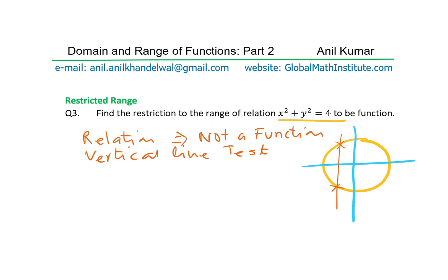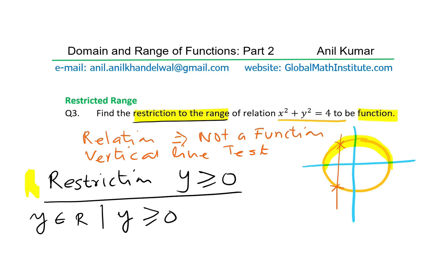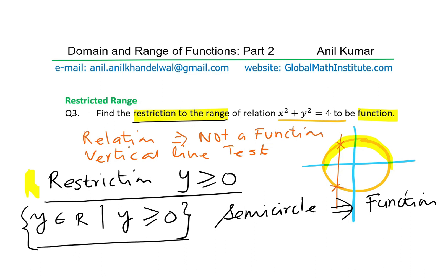The question is: how can I restrict the range to make it a function? One way is to consider only the upper half — restrict the range to positive y values. So the restriction is: y belongs to real numbers where y is greater than or equal to 0. This gives us the upper semicircle, which is a function.